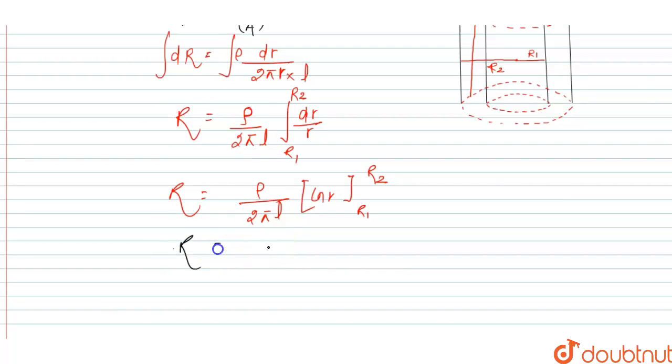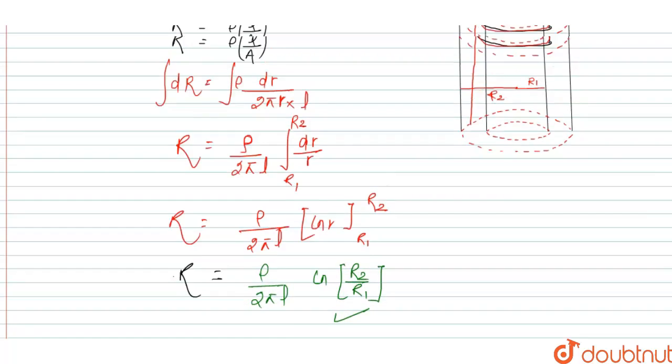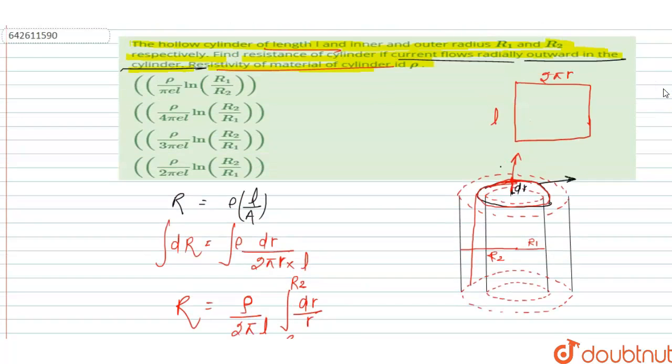Then resistance R is equal to rho over 2 pi L ln R2 by R1. And this is the total resistance of the cylinder. When we see the option of this question, then option rho of 2 pi L ln R2 by R1, option D is the right answer of this question. Thank you.